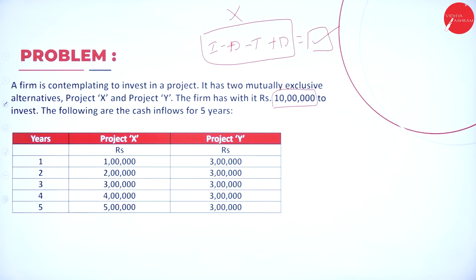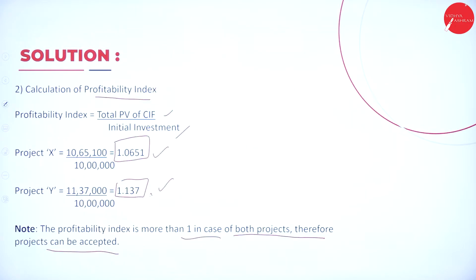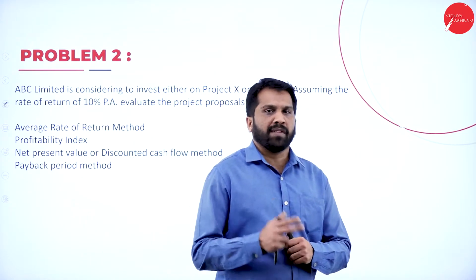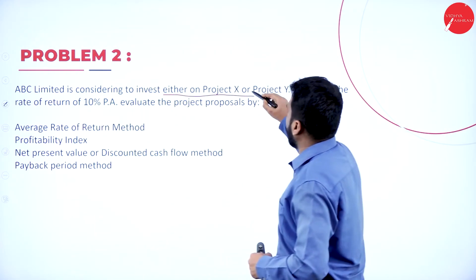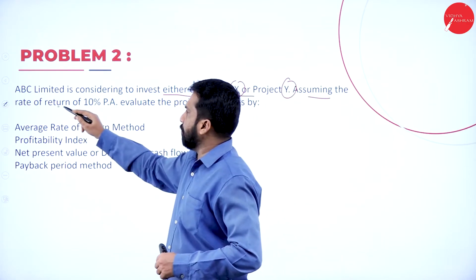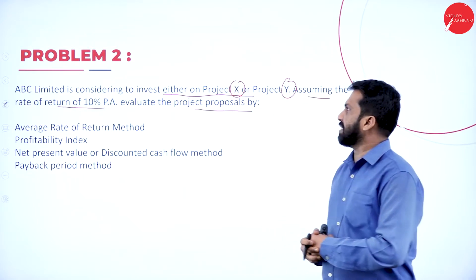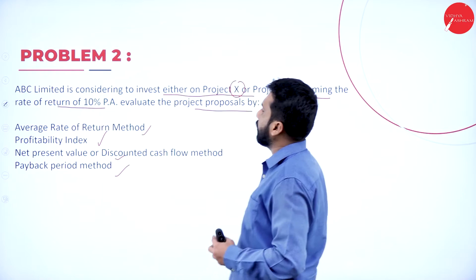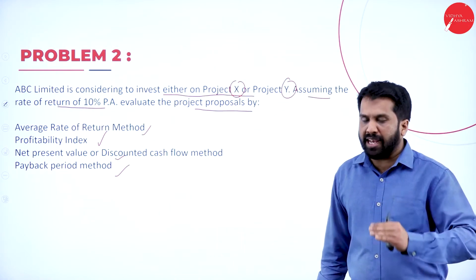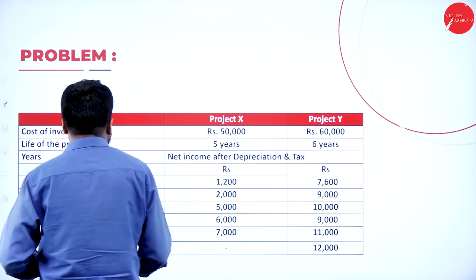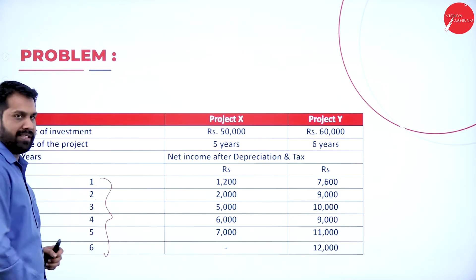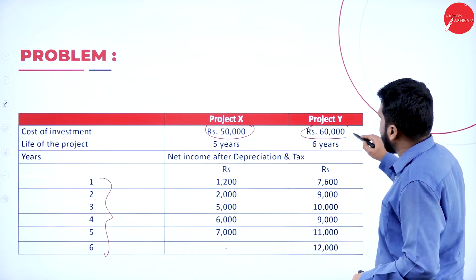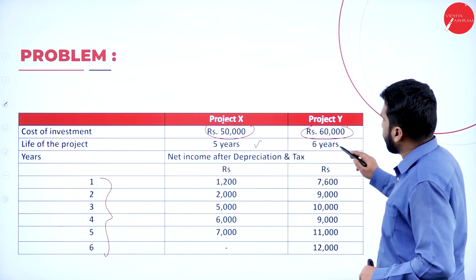Problem number 2. Under capital budgeting, ABC Limited is considering to invest either in project X or project Y. Assuming the rate of return is 10%, evaluate the project proposals by: average rate of return, profitability index, net present value, and payback period — everything we have to go through one by one. For project X, the investment is 50,000 for 5 years. For project Y, it is 60,000 for 6 years.